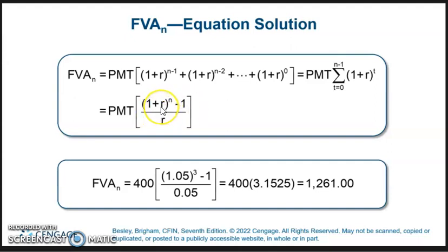In this case, it's $400, our payment, times 1.05 to the third power minus one divided by 0.05, and that equals $1,261, just like before.